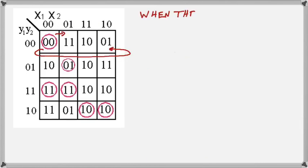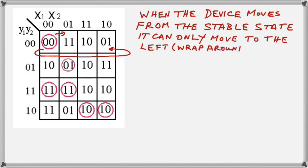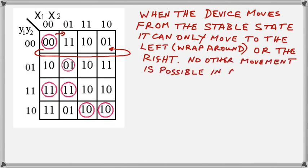In this slide, we can see how we can move from a stable state. We can either move to the right, or we can move to the left. Since the stable state is on the left side of the transition table, moving to the left will wrap around as shown with the arrow. No other movements are possible in the first row.